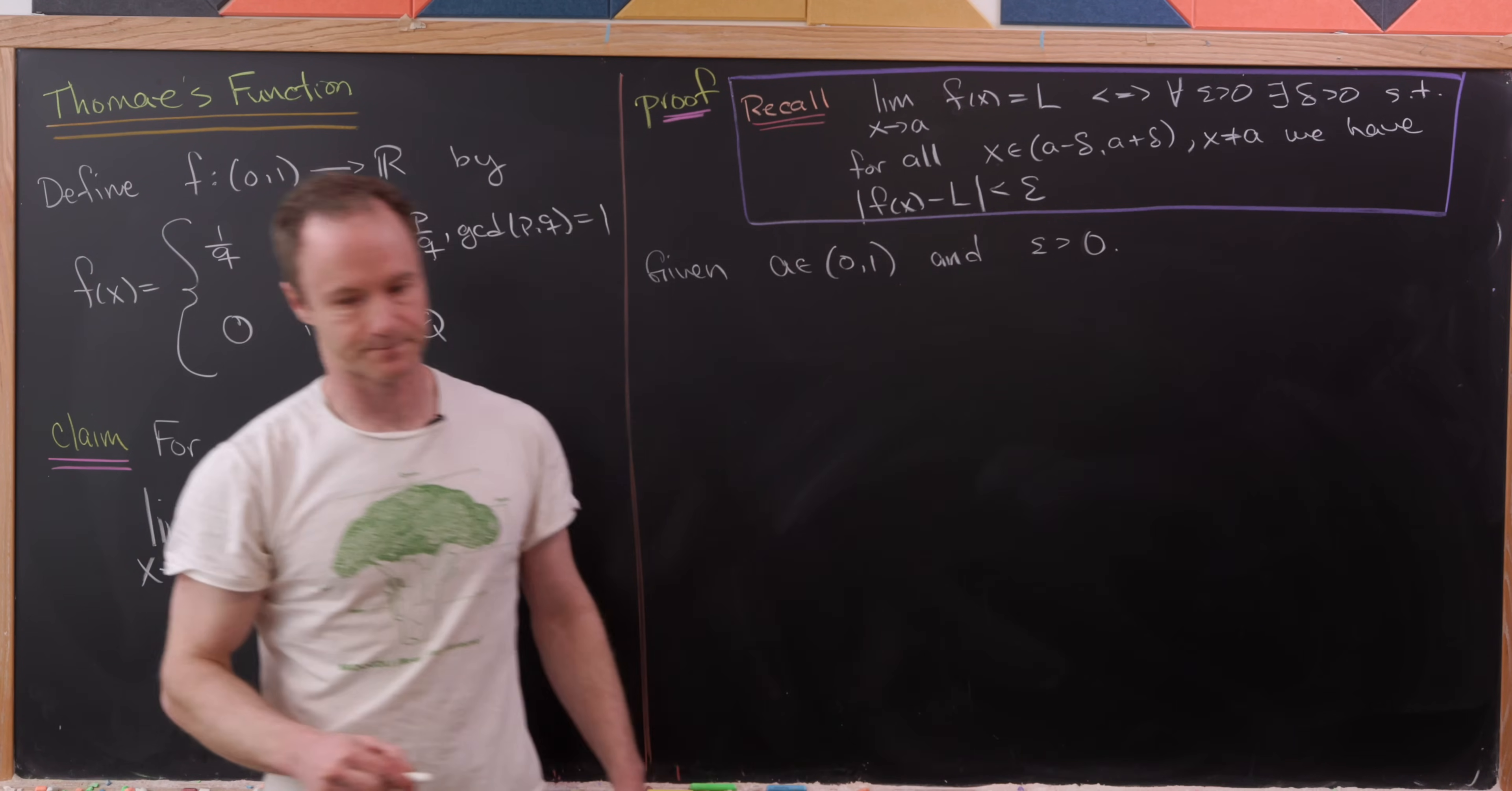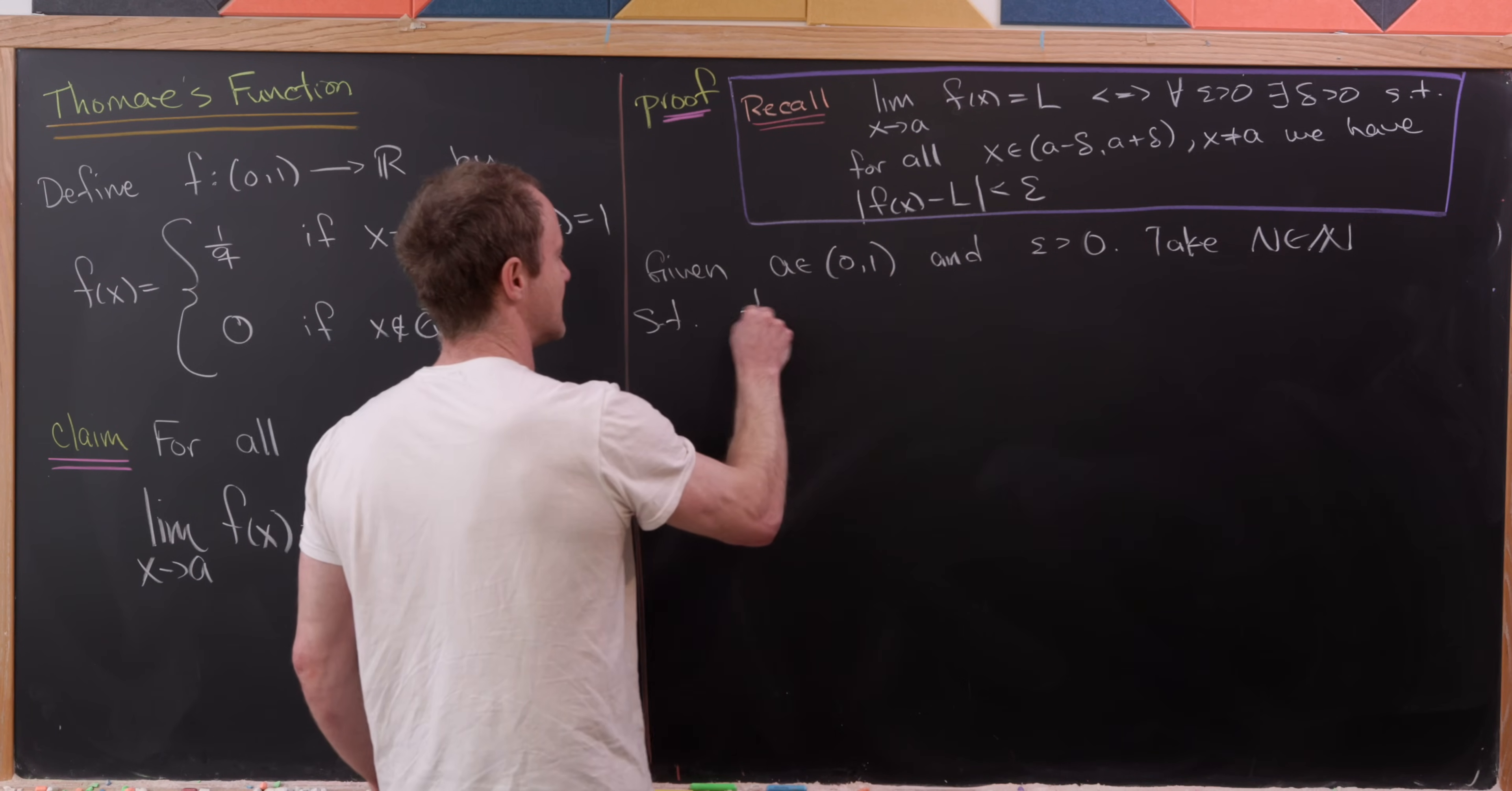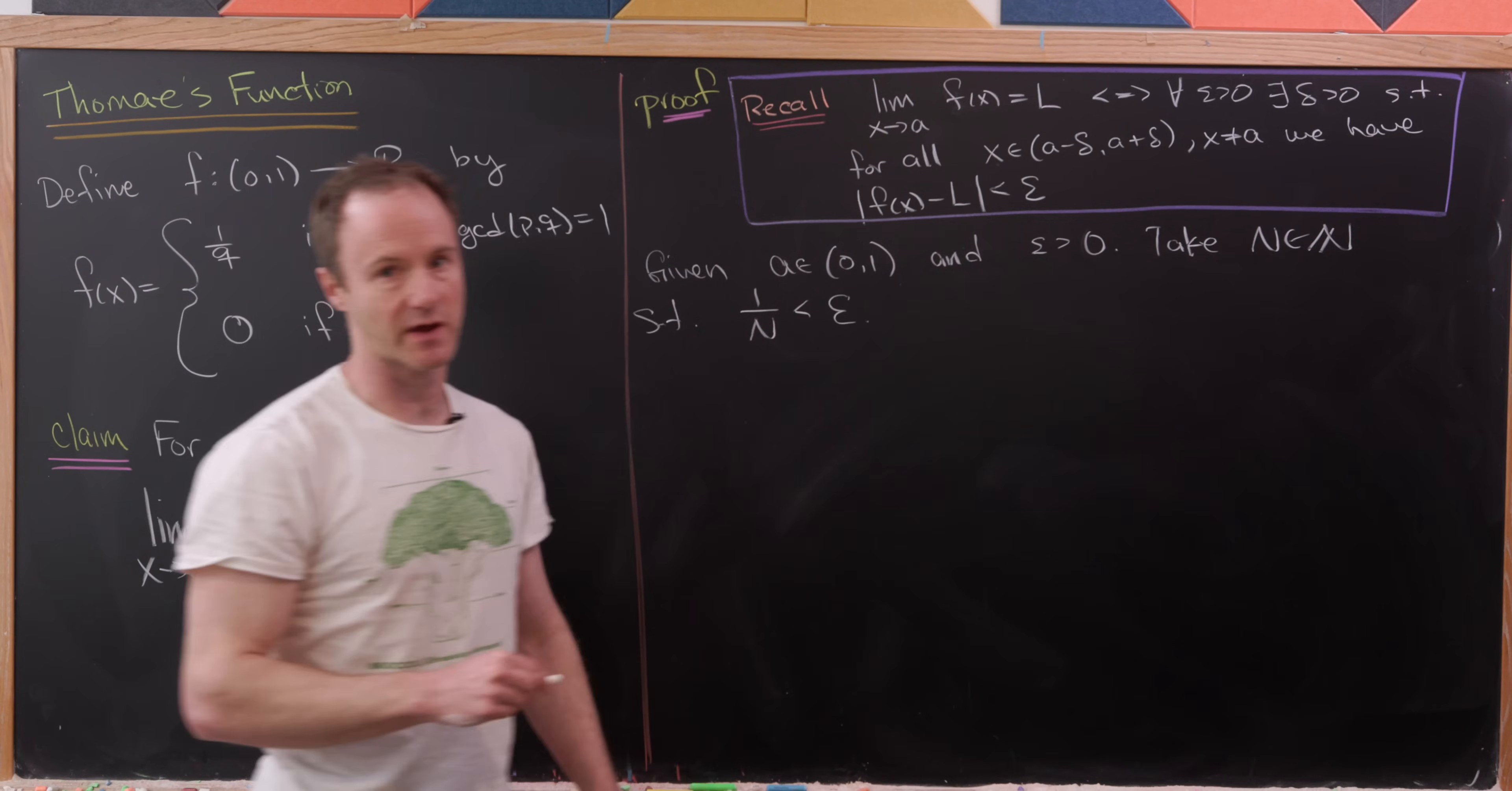Okay, cool. So now what we want to do is take some natural number, I'll call it capital N, so that the reciprocal of that natural number 1 over capital N is less than epsilon. Okay, nice.